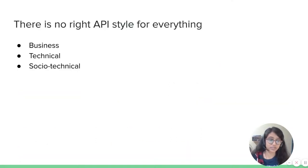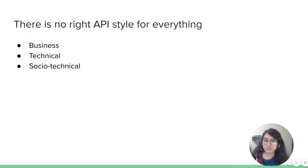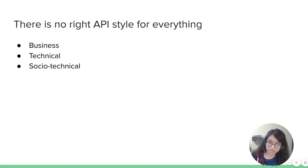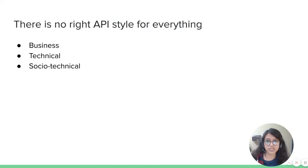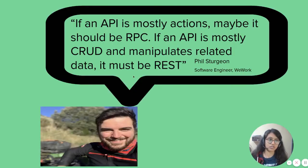There is no right API style for everything, as mentioned earlier. So before developing an API, you have to consider the following constraints: business, technical, and socio-technical. Then lay the properties of the system, like whether you need scalability and so on. Coming to business constraints, there may be cases like if your system can consume flat files, then go ahead with gRPC. There may be technical constraints that involve distributed system complexity problems, and there may be socio-technical constraints as well, that involve whether you have the particular manpower or the expertise to develop that particular system.